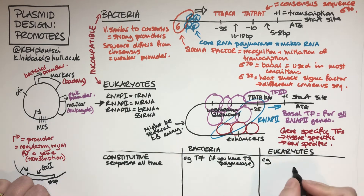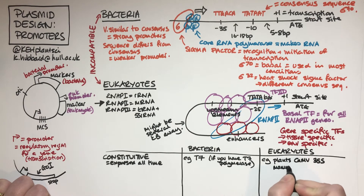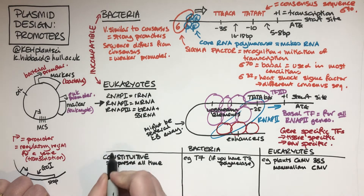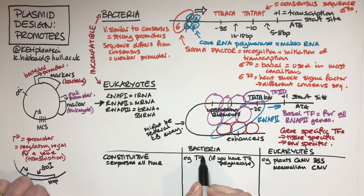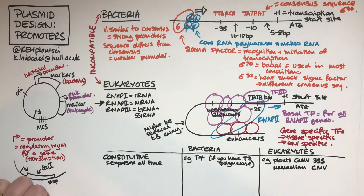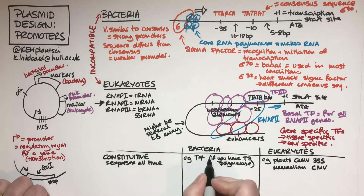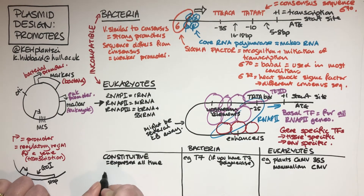In eukaryotes, in plants there's one called the cauliflower mosaic virus 35S promoter, which is switched on strongly all the time. In mammals, there's another one derived from a virus called CMV. Notice that these constitutive promoters that we tend to use when making plasmids, if we want things switched on really strongly all the time, are often derived from viruses. Viruses want to make sure viral proteins are made really strongly without waiting for particular environmental conditions, so viral promoters are good at driving constitutive expression.